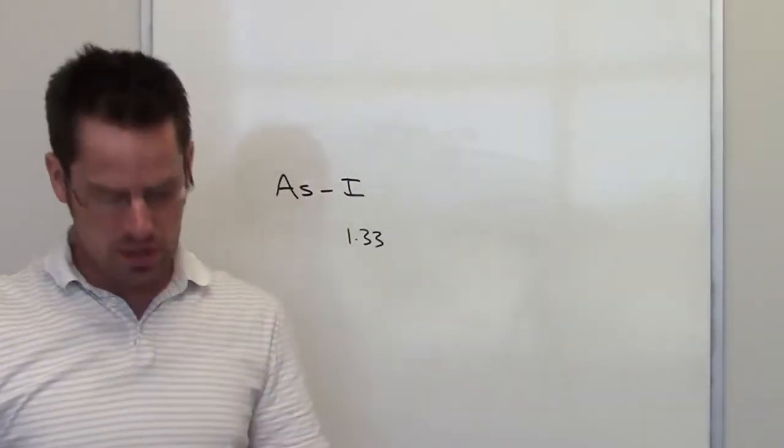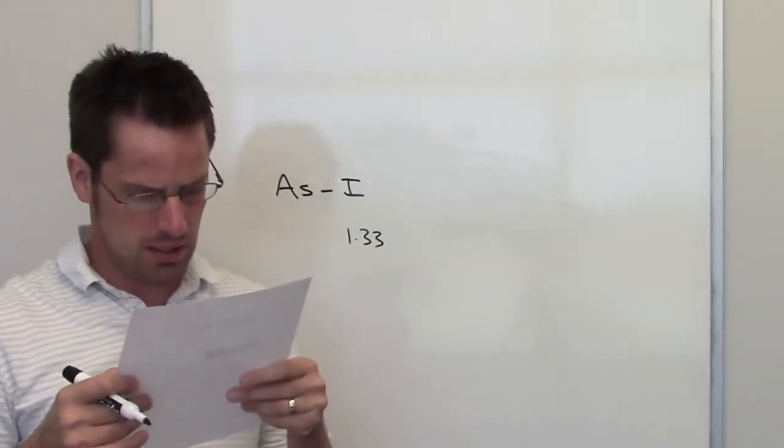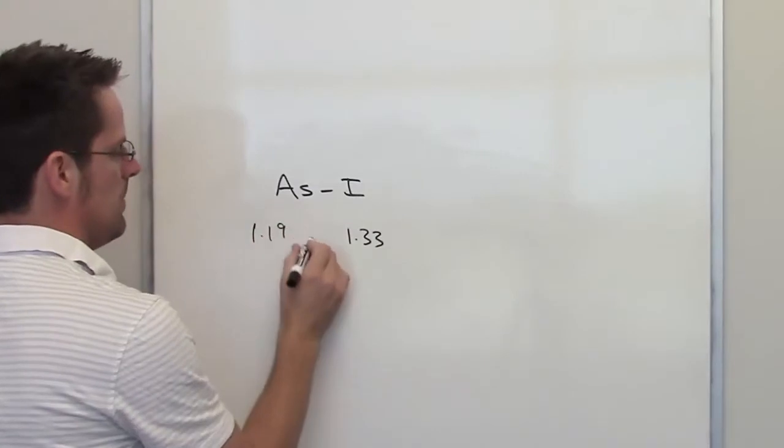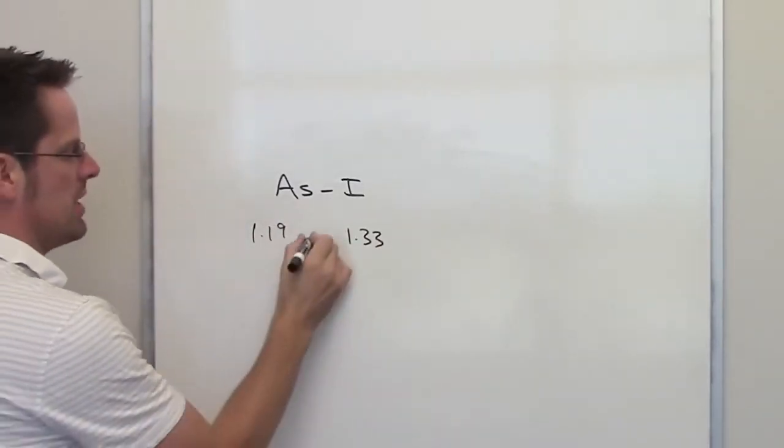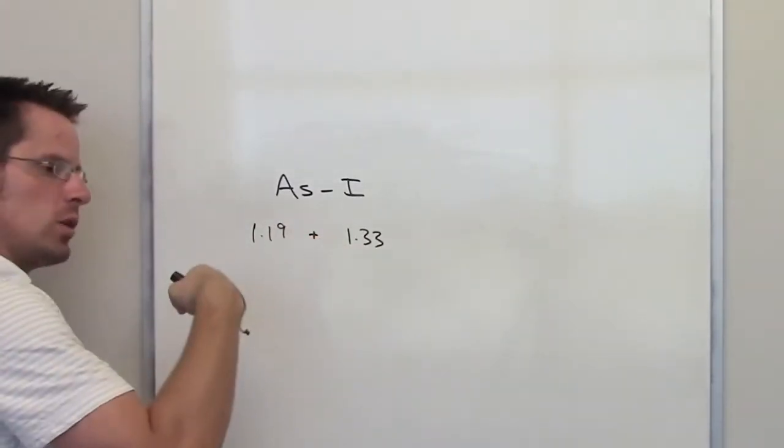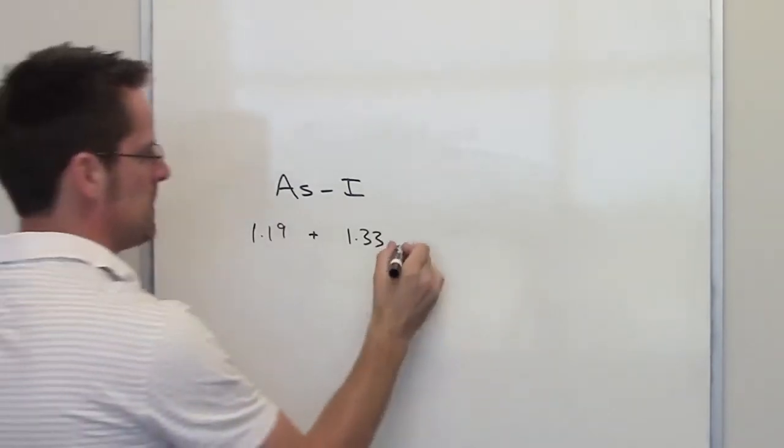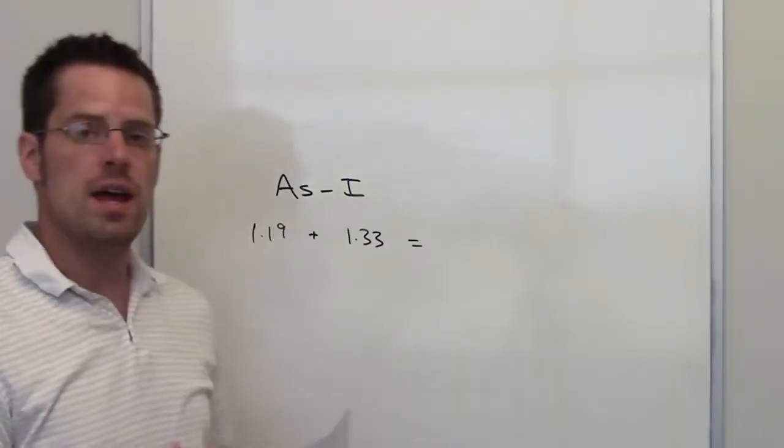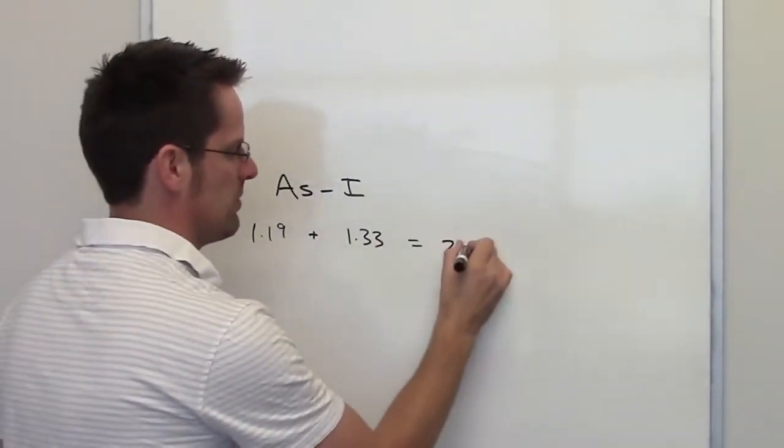Arsenic, in contrast, which is element 33, has a calculated bond length of 1.19. Thus, when these two elements bond, their total radius from one nucleus to the other should be the sum of these two numbers, 1.19 plus 1.33. That number comes out to be 2.52.